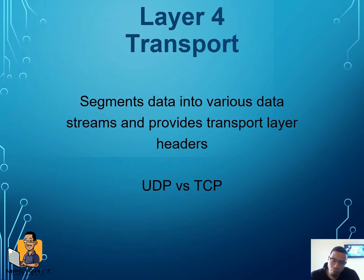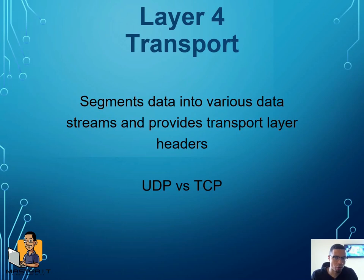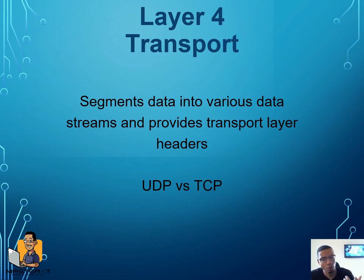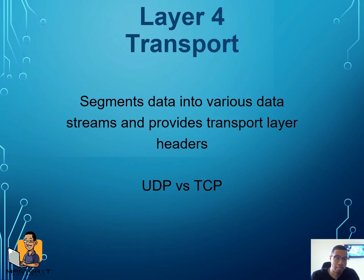The transport layer, just like it says, is responsible for transporting information — UDP and TCP. Quick review: what's the difference between UDP and TCP? One is connection-oriented and the other is connectionless. UDP is connectionless; TCP is connection-oriented. UDP is all about speed — it doesn't need acknowledgments. TCP is all about reliability — it wants to make sure you actually receive the information. UDP is faster but not as reliable; TCP is more reliable and will make sure the information gets to you.